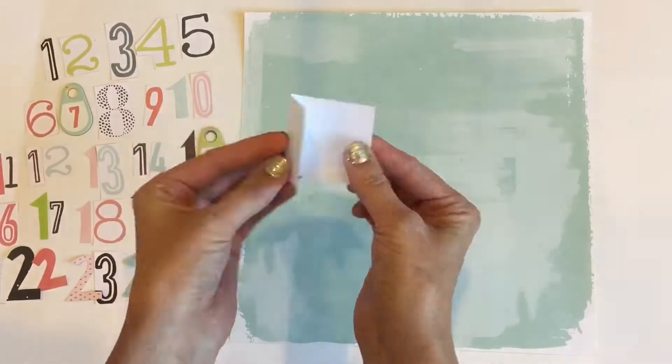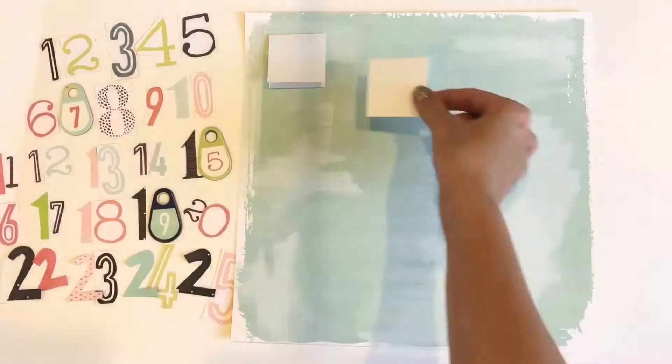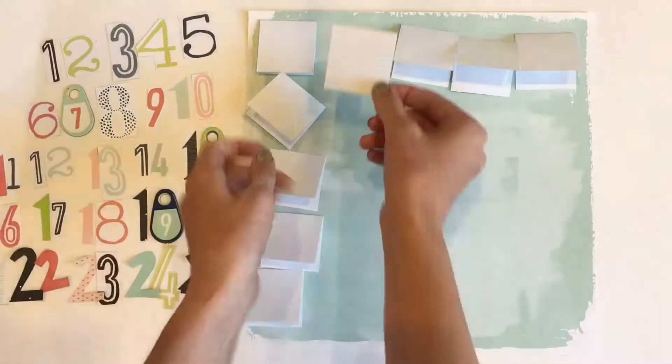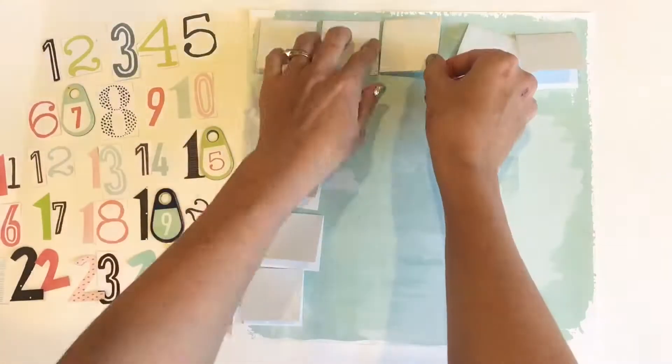You'll need a 12 by 12 piece of paper, some white cardstock, and some cute little numbers. Everything is from the November Coco Daisy kit, except for the white paper.